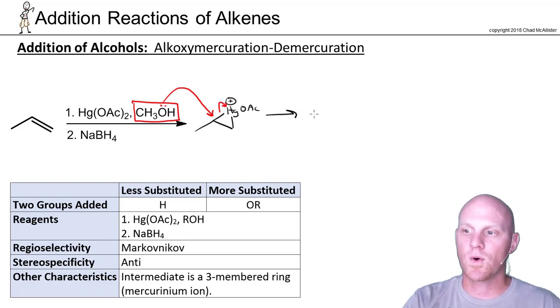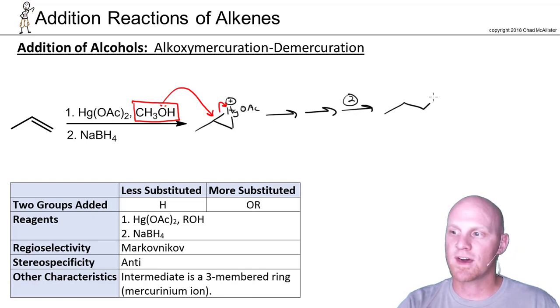I'm not showing the whole mechanism here, so a couple steps down the road and including step two after we've replaced the mercury, the net result is we've added an H to the less-substituted side and the OCH3 to the more-substituted side.